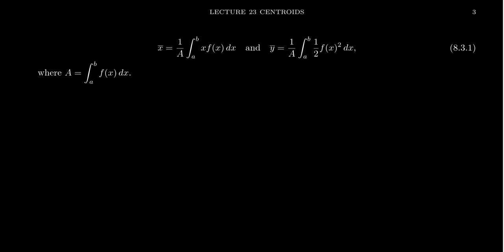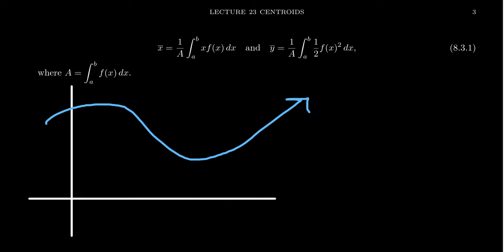Suppose next that we have a region R that's bounded by some function f of x. So if we have just our typical x-axis and y-axis, and we have some function f which maybe looks something like this. We have some function f, and then maybe we have some bounds on x. We have some x equals a and x equals b.